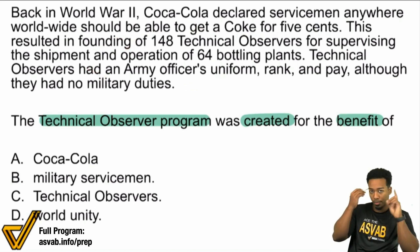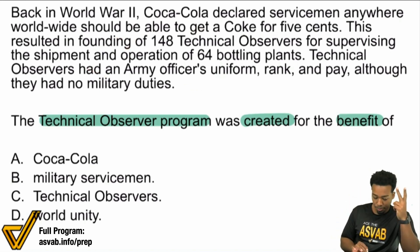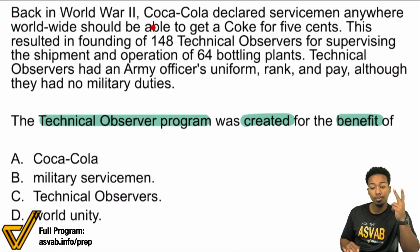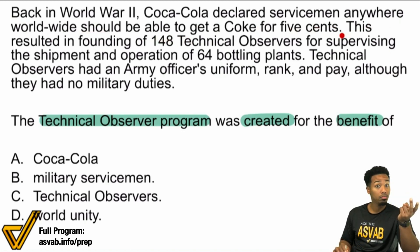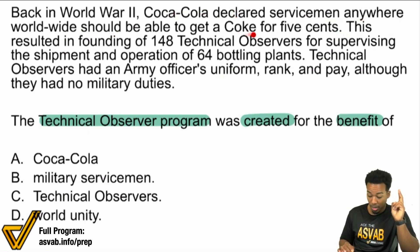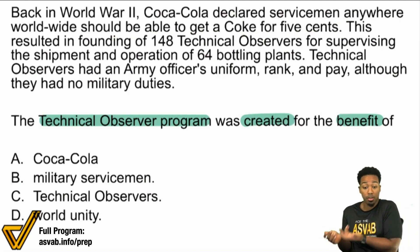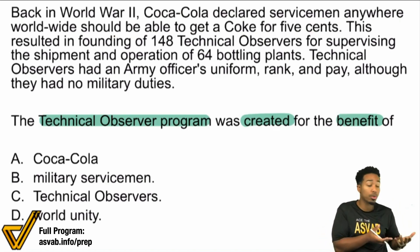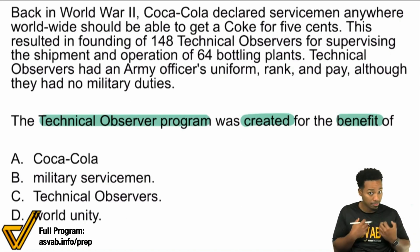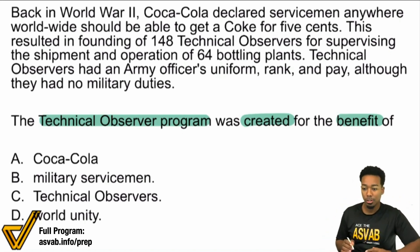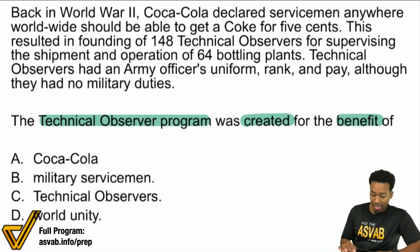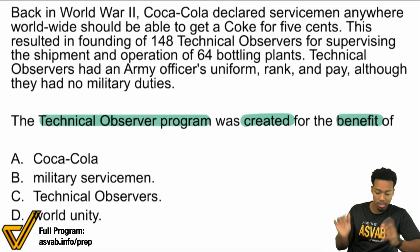So I know what I'm looking for: the Technical Observer Program — who benefited? Here we go. Back in World War II, Coca-Cola declared servicemen anywhere worldwide should be able to get a Coke for five cents. Coca-Cola declared servicemen anywhere should be able to get a Coke for five cents. So it sounds like servicemen are the people who are going to benefit — they're going to get something. What does benefit mean? Getting something. So from that first sentence already, it sounds like the servicemen are going to be benefiting. But keep reading.